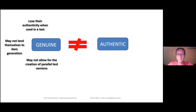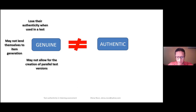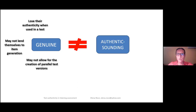So what is the solution? As we argue in the article, we think that taking genuineness for authenticity may not be the right approach. We argue that text authenticity lies in texts that are perceived to reflect real-life purposes — so-called situational authenticity — and that have spoken language characteristics irrespective of their origins. They might be genuine or they might be produced specifically for testing purposes. But if they are perceived as authentic, they can be called authentic-sounding. This is the term we use for them.